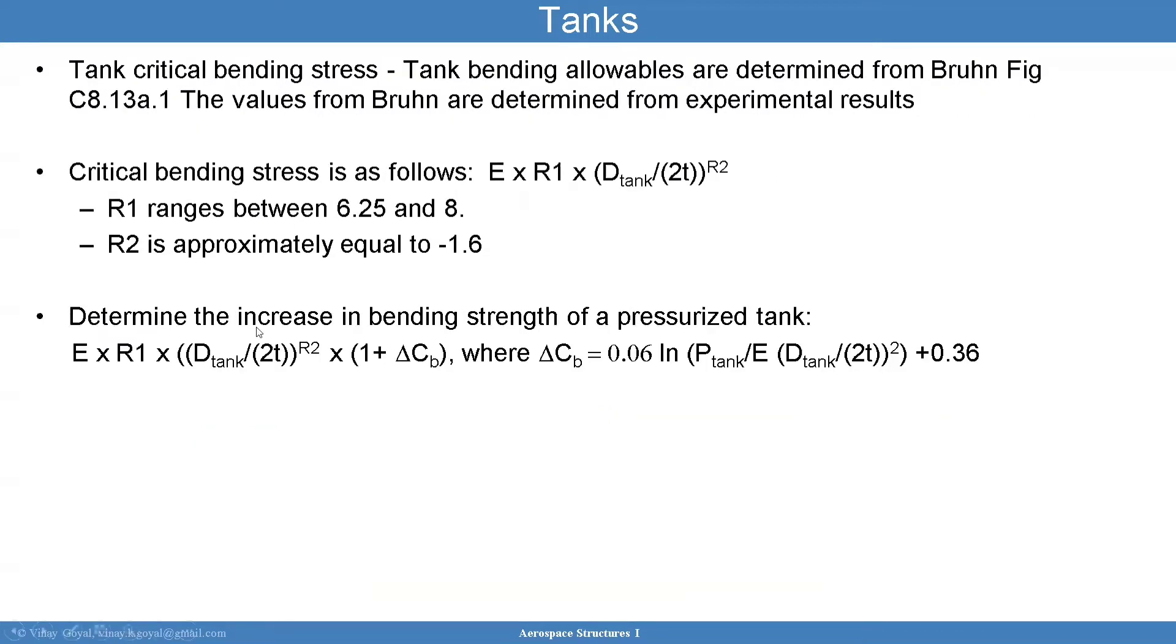The tank critical bending stress can be found. The tank bending allowables are determined from Bruhn's book figure C8-13-8.1. The values from Bruhn were determined from experimental results. Critical bending stress is as follows: you have E the modulus times R1 times the diameter of the tank divided by 2T all elevated to the R2. R1 typically ranges from these values and R2 is approximately equal to minus 0.16. So you can do a sensitivity study to determine that critical bending stress for the structure.